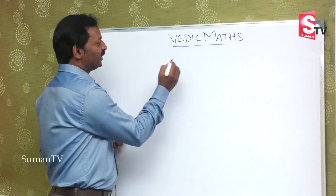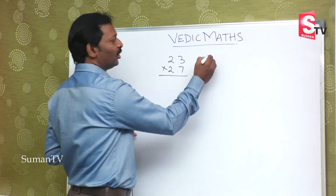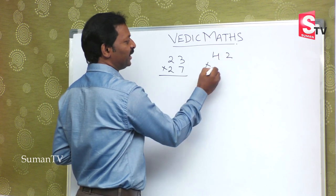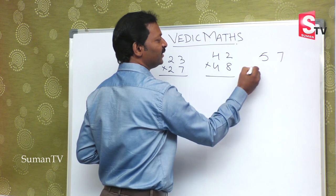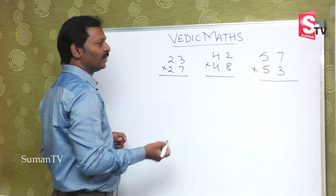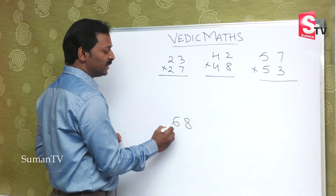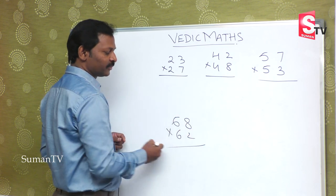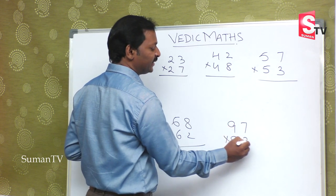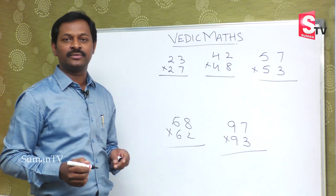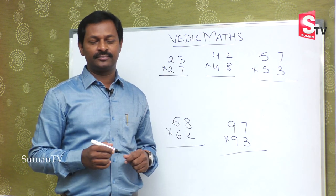Suppose 23 is multiplied by 27, or 42 is multiplied by 48, 57 is multiplied by 53, 68 is multiplied by 62, 97 is multiplied by 93. So it is a two-digit number multiplied by a two-digit number.